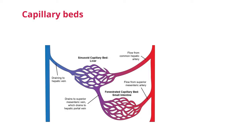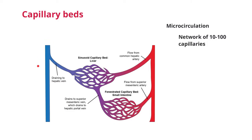In order for capillaries to function efficiently, they form capillary beds, also known as microcirculation. Microcirculation is a network that can include 10 to 100 capillaries, connecting to arterial flow and venous return. Blood coming in on the artery side is oxygenated and nutrient-rich, and blood going out carries carbon dioxide and waste back to the heart.